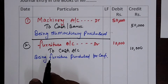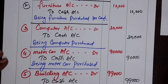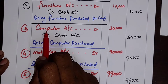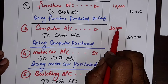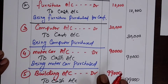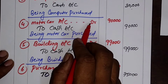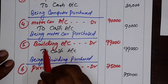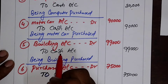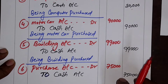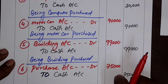Writing all entries together: for purchase of computer, Computer Account Debit to Cash Account; for motor car, Motor Car Account Debit to Cash Account; for building, Building Account Debit to Cash Account — building is coming in and cash is going out; and for the last one, instead of writing goods, write Purchase Account Debit to Cash Account. That covers purchasing of all these assets.